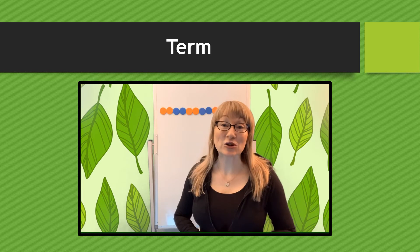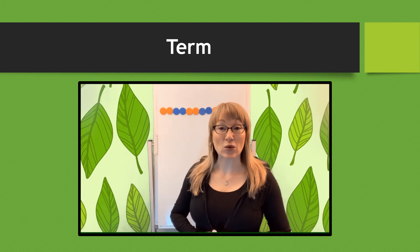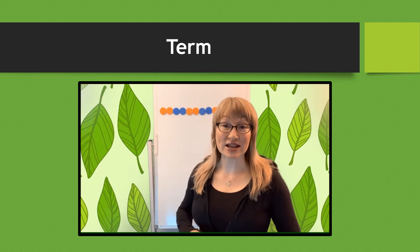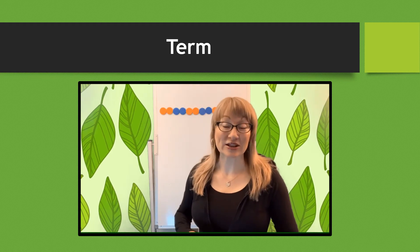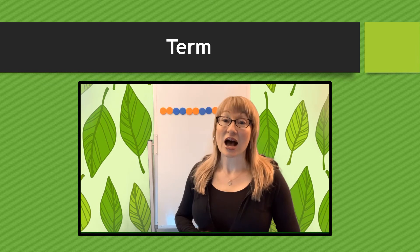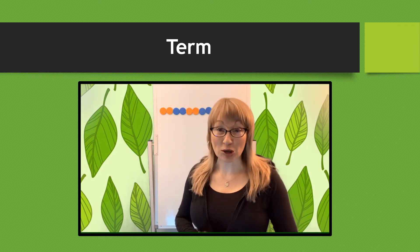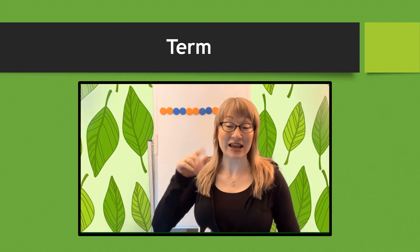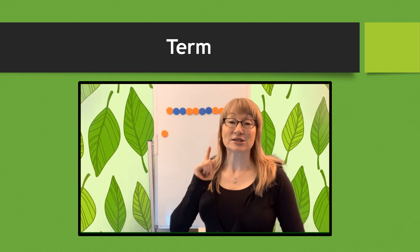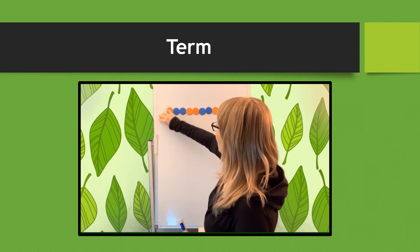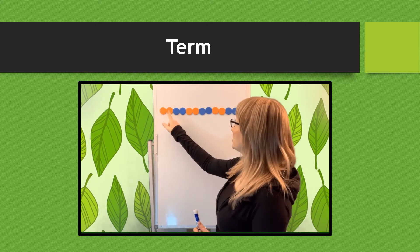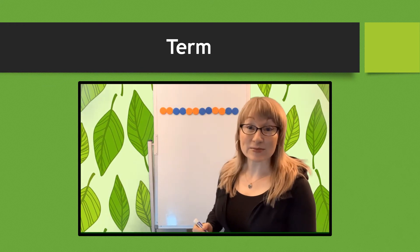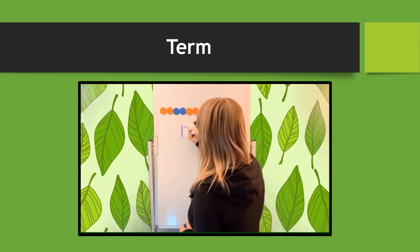Now that you know what attributes are, we're going to move on to learning what terms are. You can see the pattern behind me — the attribute that's changing is the color, so I've got orange and blue. A term is an individual item in your pattern, so every little thing is a term. Let's count them: one, two, three, four, five, six, seven, eight, nine, ten, eleven, twelve. So in this pattern I have 12 terms.